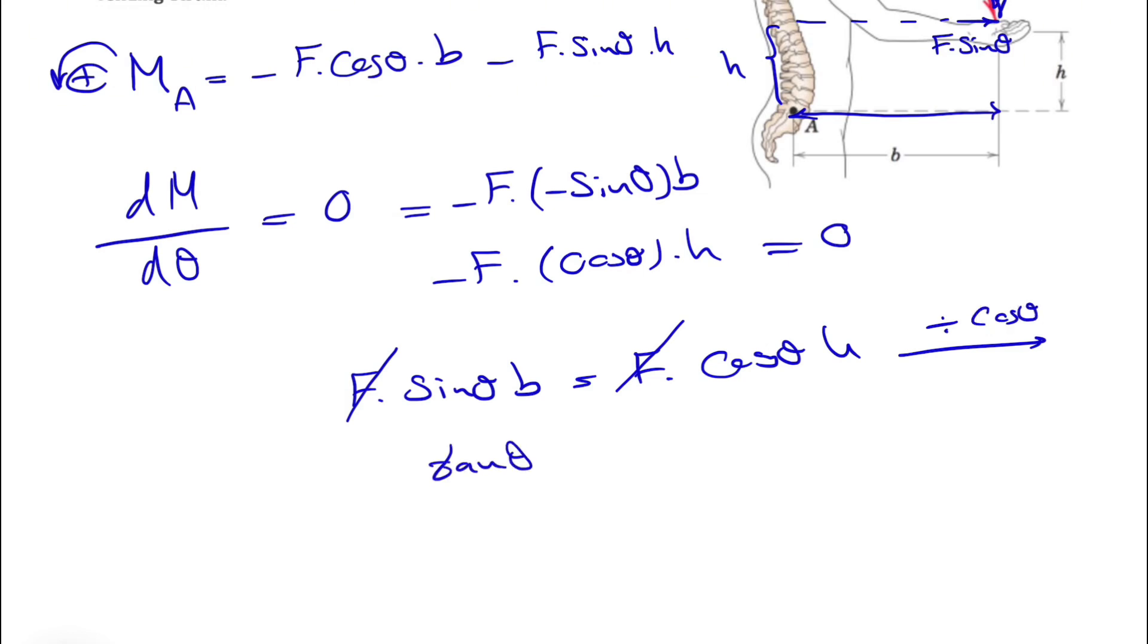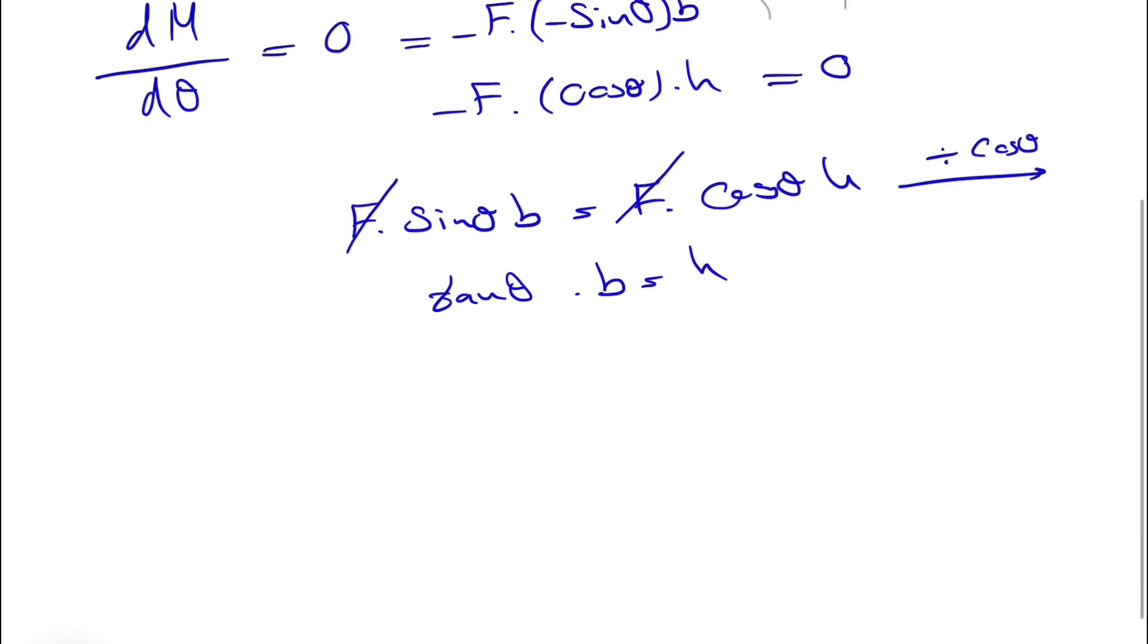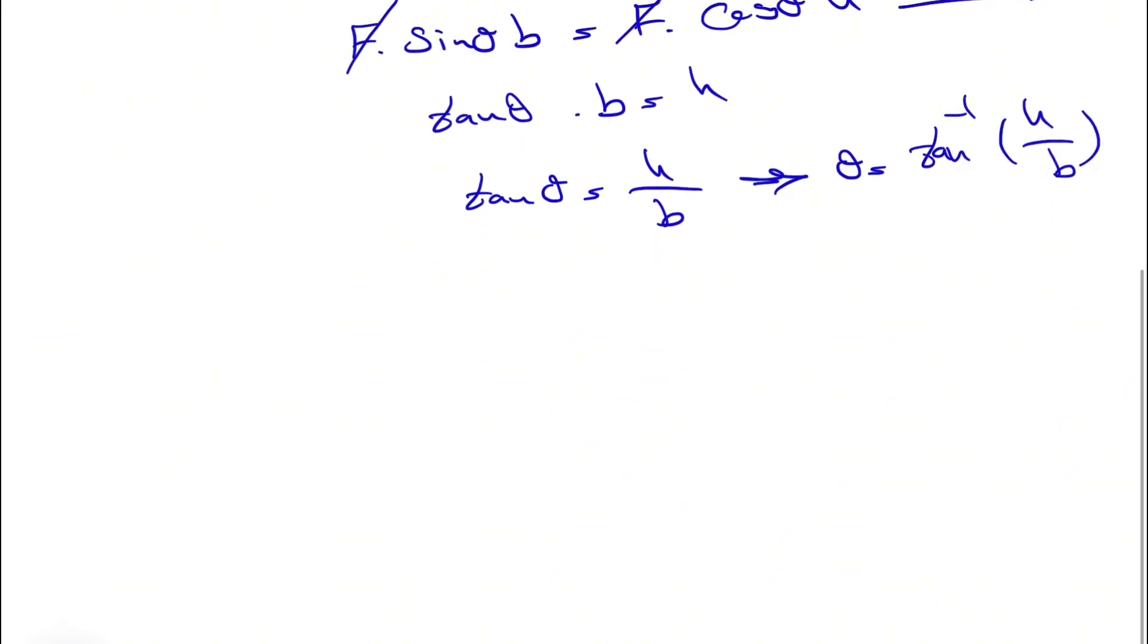If we divide this by cosine of theta from the left side, we get tangent of theta times b is equal to h, meaning tangent of theta is h over b, or our theta will be tangent inverse of h over b. So yeah, that was the first method.